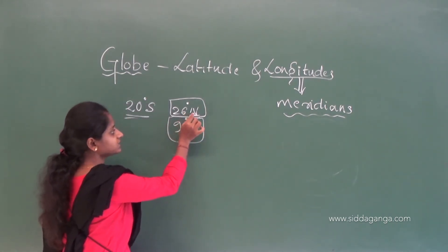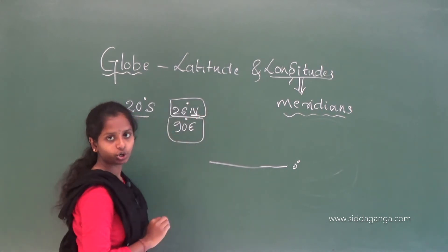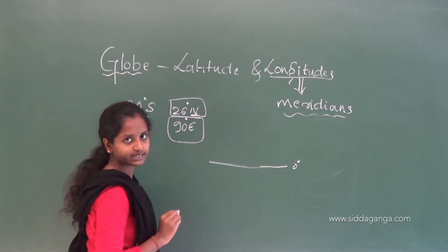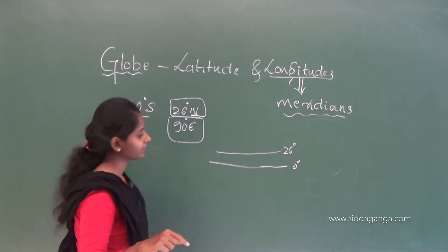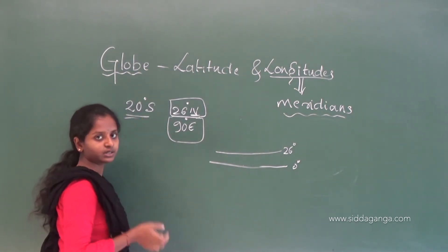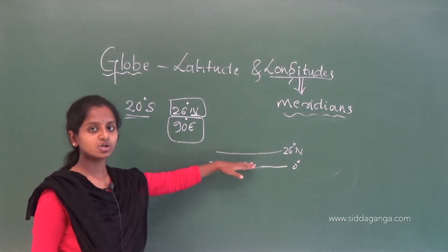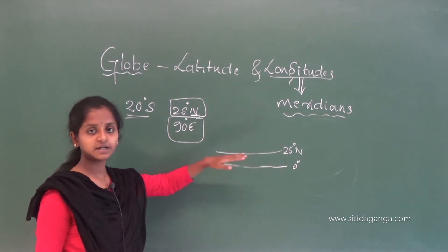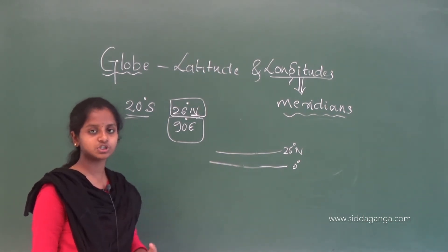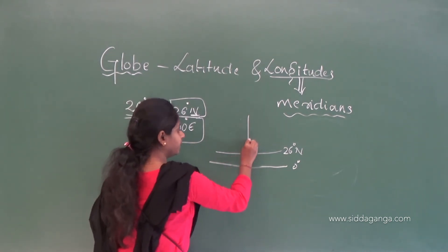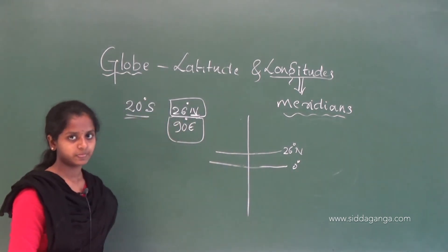First, we find 26 degrees north. The equator is 0 degrees, so we go to the north side and find 26 degrees on the globe. We have located the 26-degree north latitude. But we do not yet have the exact position of Dubri — we still need the longitude. The prime meridian divides east and west.